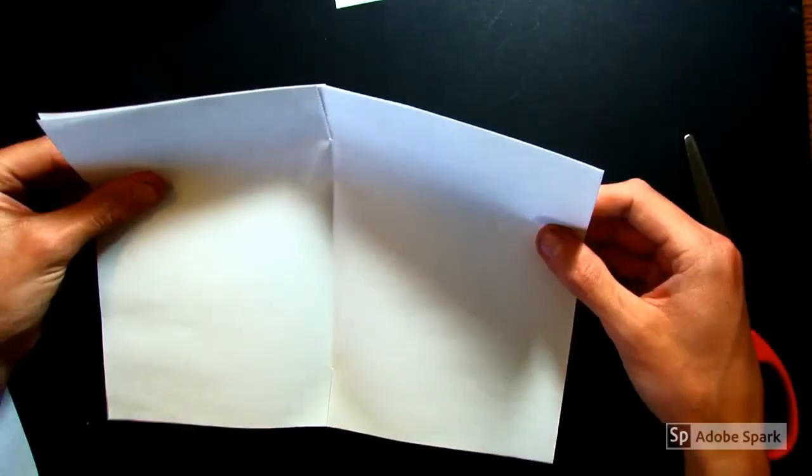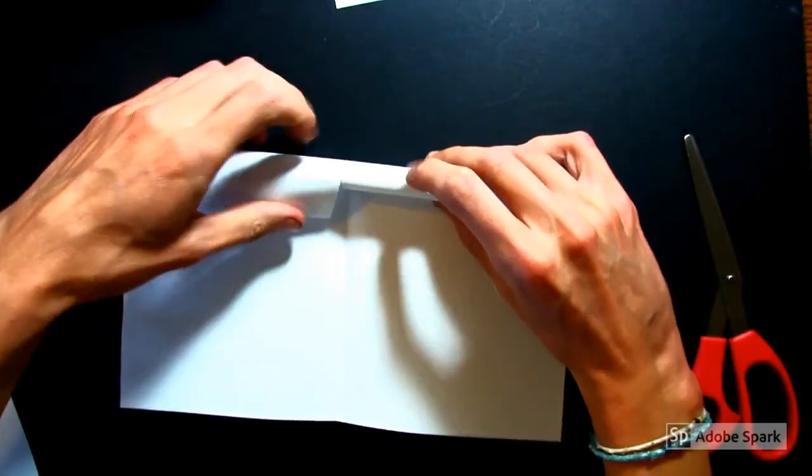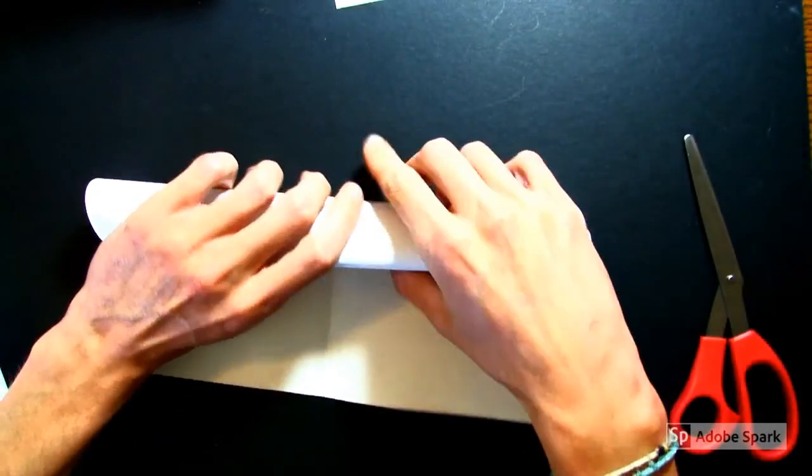Now, here comes the tricky part. You're going to take this newly cut piece of paper, and you're going to roll it up just like a telescope.